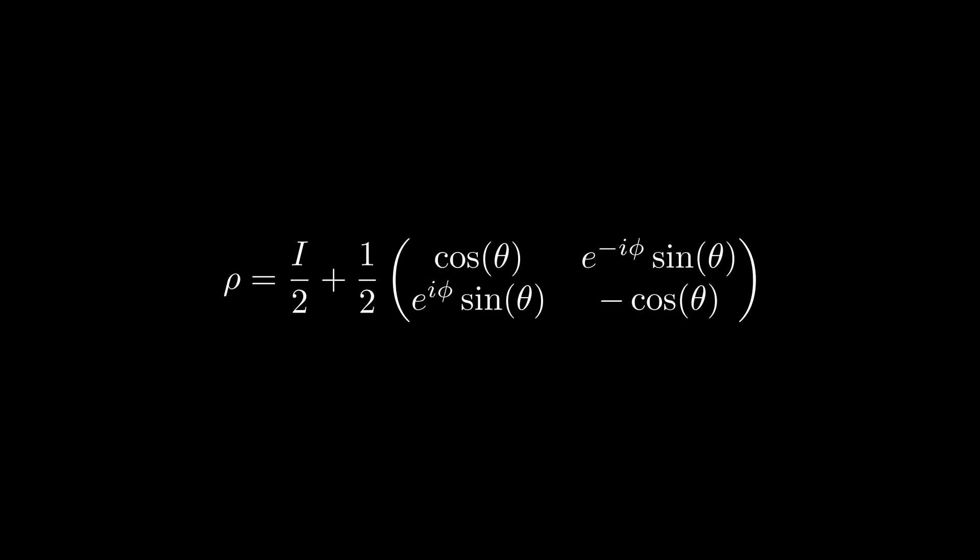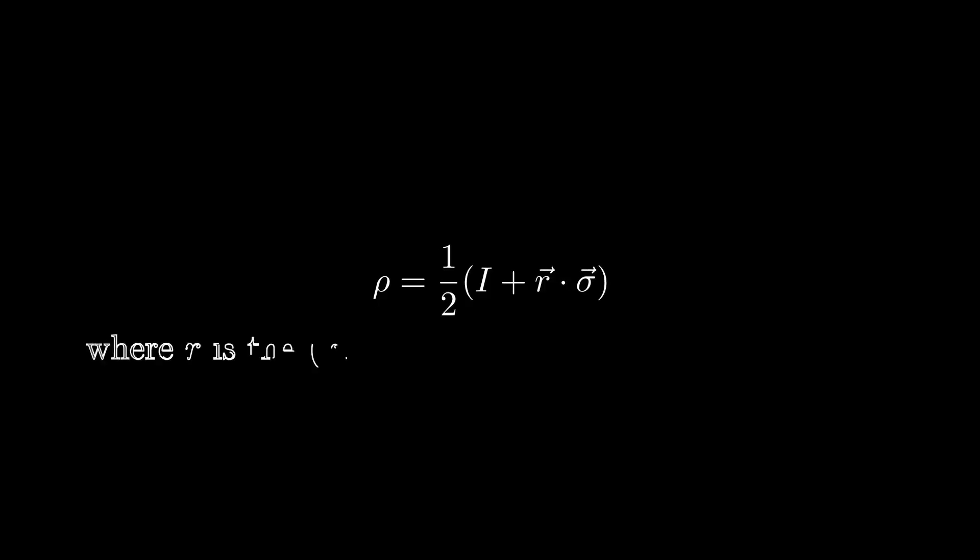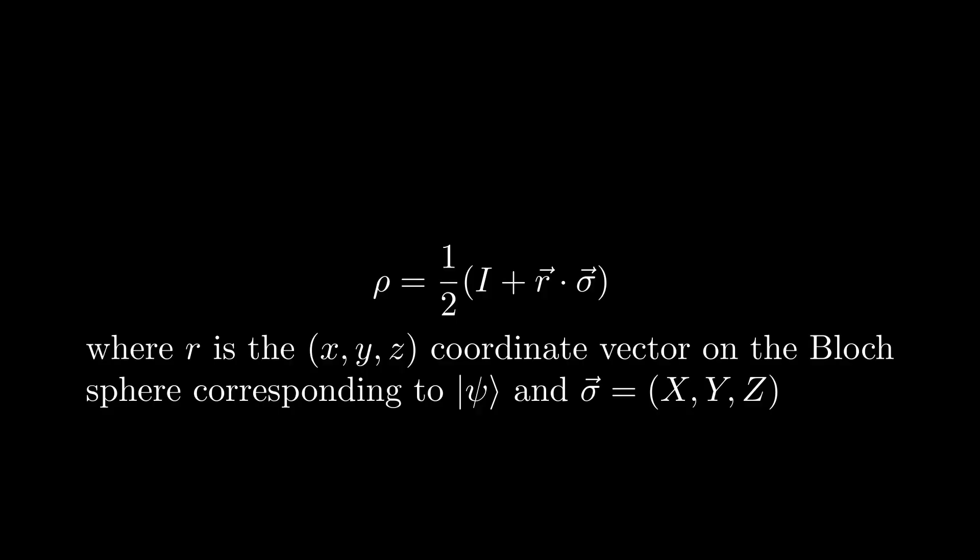Interestingly, we can observe that when we factor out 1 half, the coefficients of the Pauli operators exactly match the x, y, z coordinates of the corresponding point on the surface of the Bloch sphere.